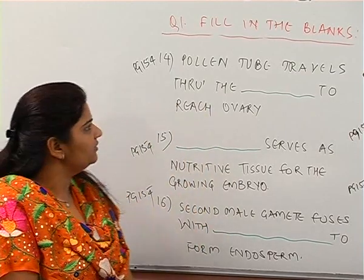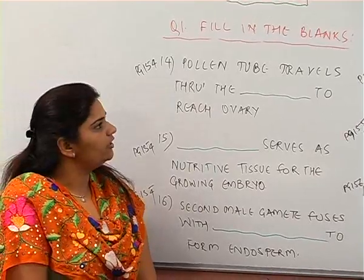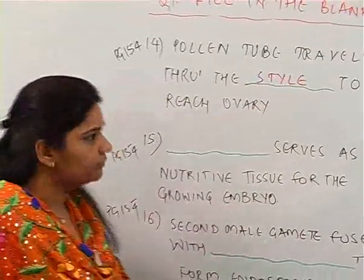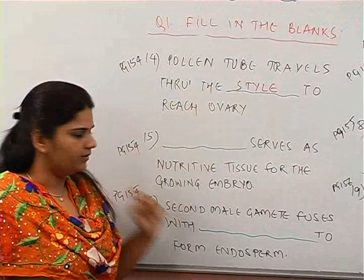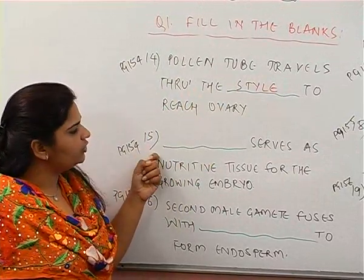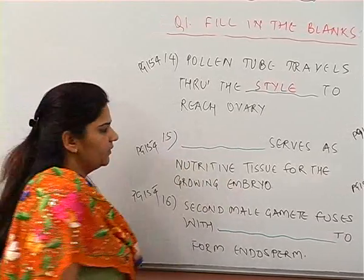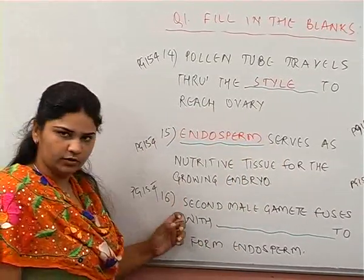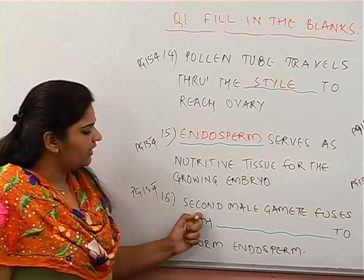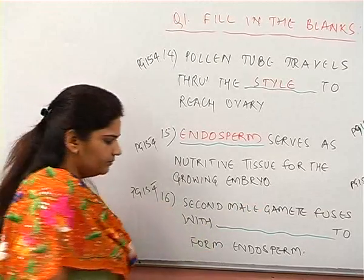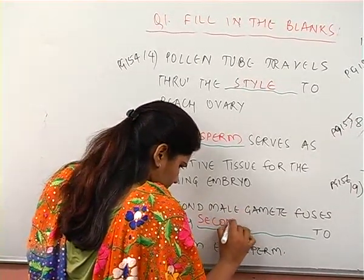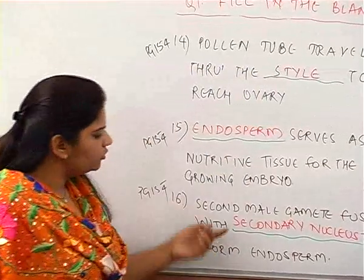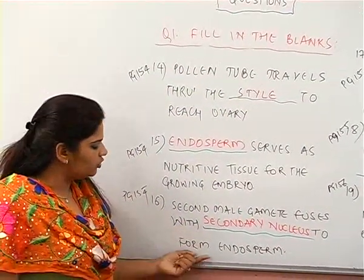The fourteenth question on page 154: pollen tube travels through the style to reach the ovary. The fifteenth question from the same page: endosperm serves as nutritive tissue for the growing embryo. The sixteenth question: the second male gamete fuses with the secondary nucleus to form endosperm.